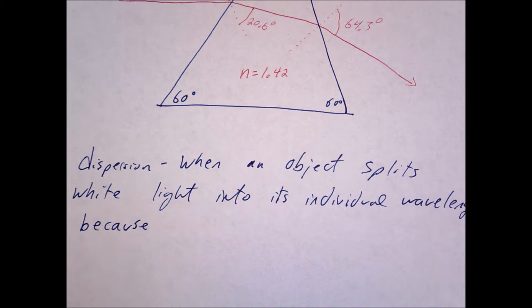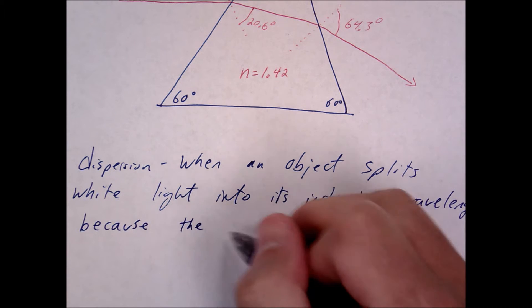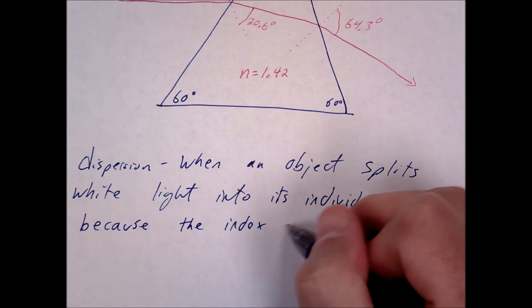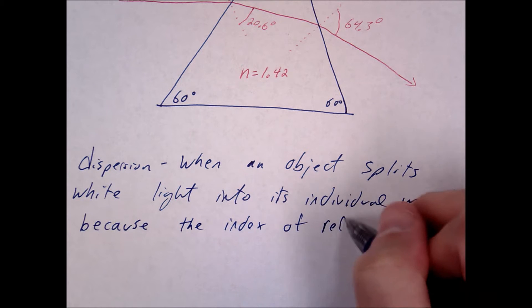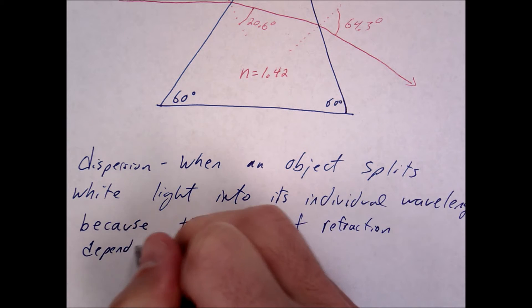So depending on what the wavelength is, the index of refraction will change. So let's just write that the index of refraction depends on the wavelength.